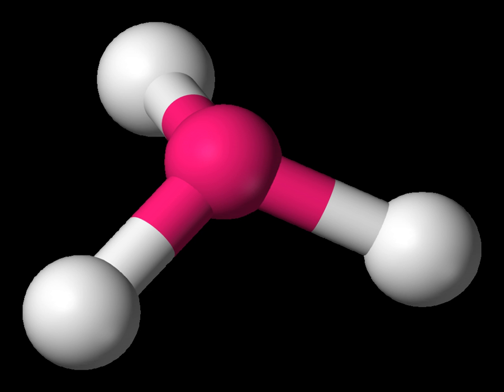The nitrogen in ammonia has five valence electrons and bonds with three hydrogen atoms to complete the octet.